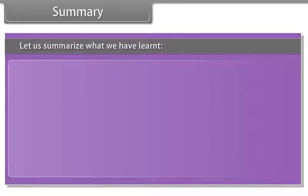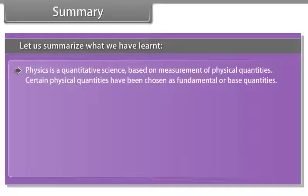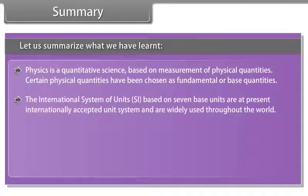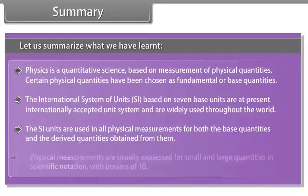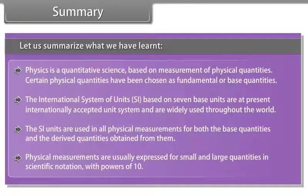Let us summarize what we have learned. Physics is a quantitative science based on measurement of physical quantities. Certain physical quantities have been chosen as fundamental or base quantities. The International System of Units SI, based on seven base units, are at present internationally accepted unit system and are widely used throughout the world. The SI units are used in all physical measurements for both the base quantities and the derived quantities obtained from them. Physical measurements are usually expressed for small and large quantities in scientific notations with power of ten.